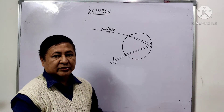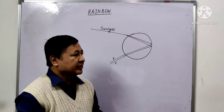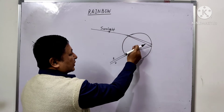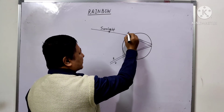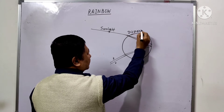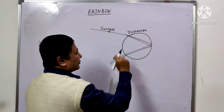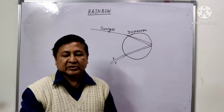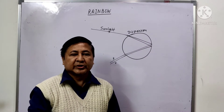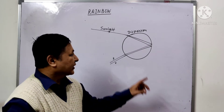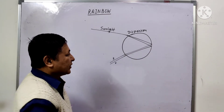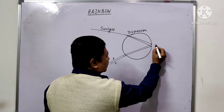The water droplet acts like a small prism which disperses the sunlight into seven colors. When the ray of sunlight enters the water droplet, dispersion takes place. Due to dispersion it splits into seven colors that we see: violet, indigo, blue, green, yellow, orange, red. Dispersion takes place on entry, and at the other side internal reflection takes place.